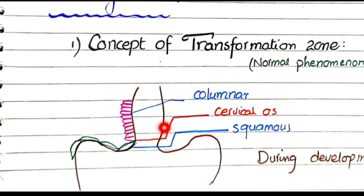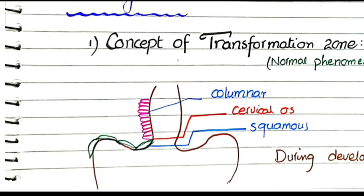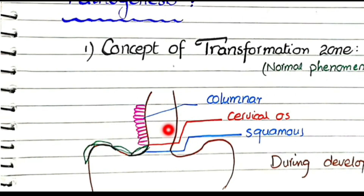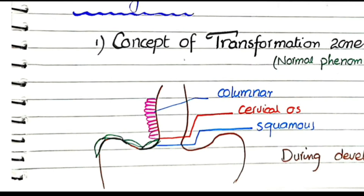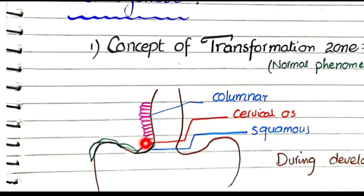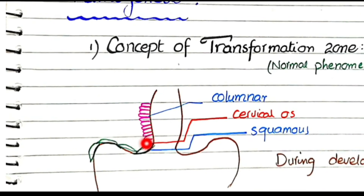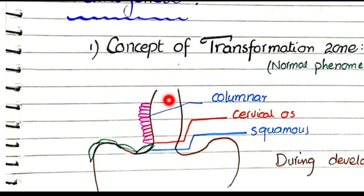Looking at this diagram of the cervix, the upper part is called the endocervix, which is connected above to the uterus. The lower part of the cervix is called the ectocervix, and this is connected to the vagina.